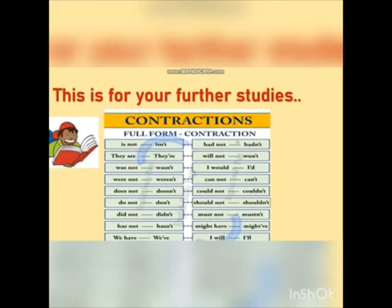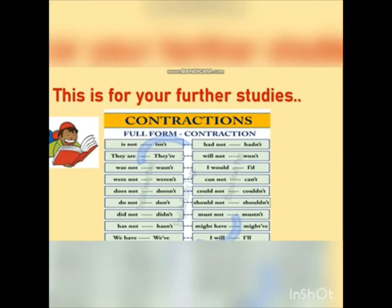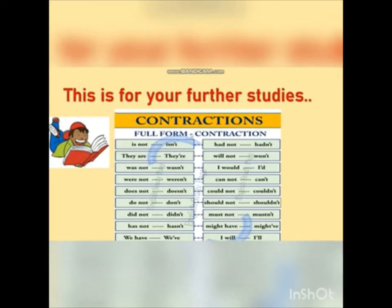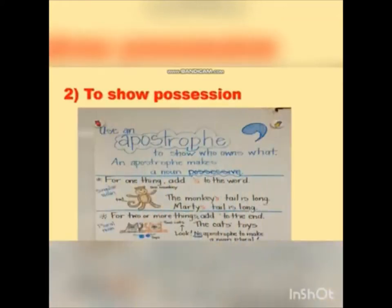Here I have given you a table for your further studies. Please refer to this table and study it. There are contractions shown in their full form and their contraction form. Please read all these contractions and study them. Now we are moving to the second usage of the apostrophe.